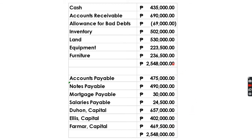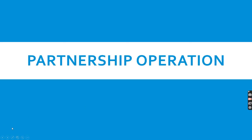We now proceed with partnership operations. After establishing the partnership and completing capital allocations and redistributions for desired capital balances, the business begins normal operations — selling goods, etc. All journal entries involved in operations are similar to a sole proprietorship, so we won't revisit those.